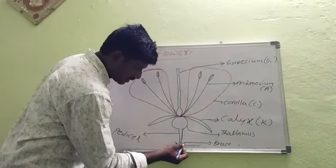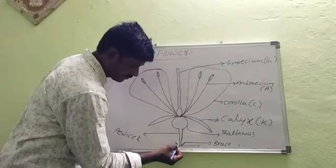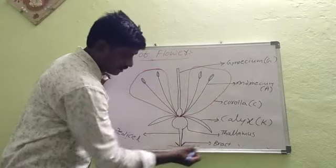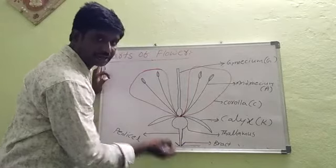Two small green color structures are present at the bottom of pedicel. These green color structures are called bracts. Bracts may be present or absent in flower.